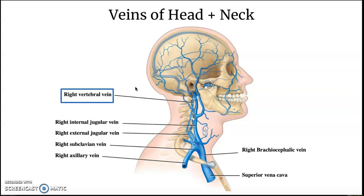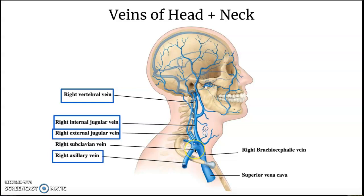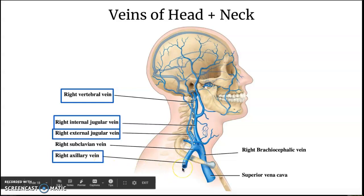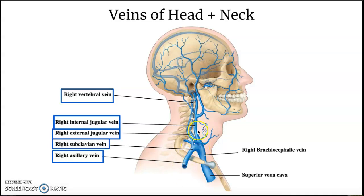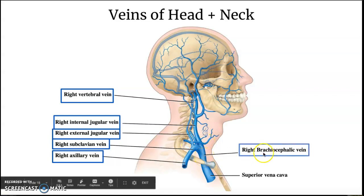For the veins of the head and neck, we have the right vertebral vein, the right internal jugular vein, the right external jugular vein, and the right axillary vein — which turns into the right subclavian vein. All of these drain and eventually reach the right brachiocephalic vein and lastly the superior vena cava.